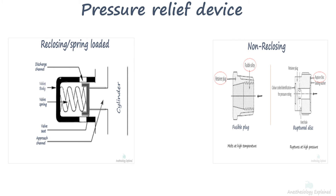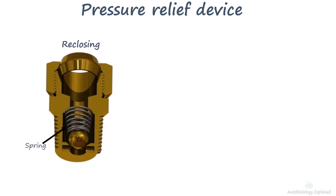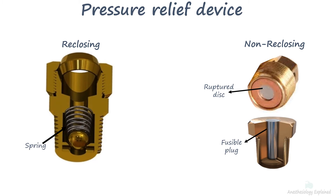Reclosing pressure relief devices are spring-loaded mechanisms designed to automatically reclose and prevent the discharge of contents once normal pressure levels have been restored. Conversely, non-reclosing devices do not reclose once the gas is discharged and pressure has normalized. These non-reclosing devices come in two primary variants: ruptured discs and fusible plugs. Some non-reclosing devices combine both ruptured discs and fusible alloys to enhance their safety.